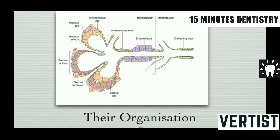In their organization, salivary glands have serous acini, mucous acini, and myoepithelial cells. Serous demilunes are also present.